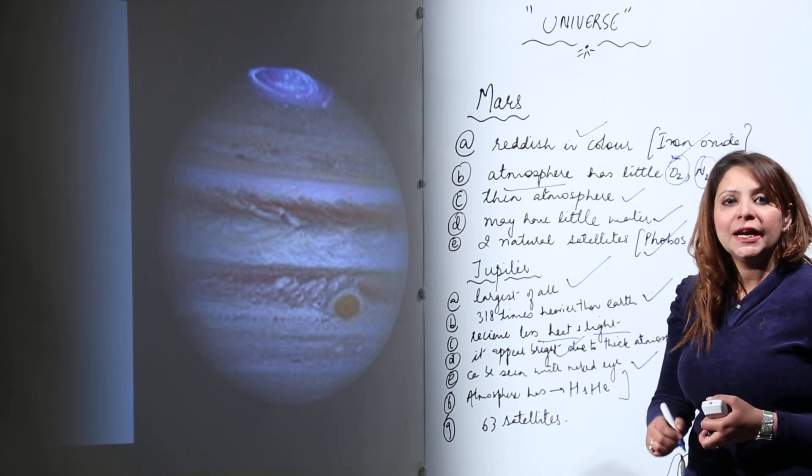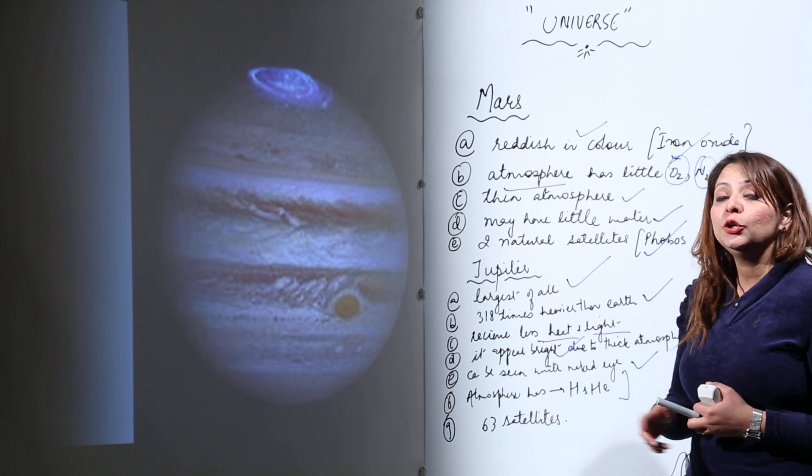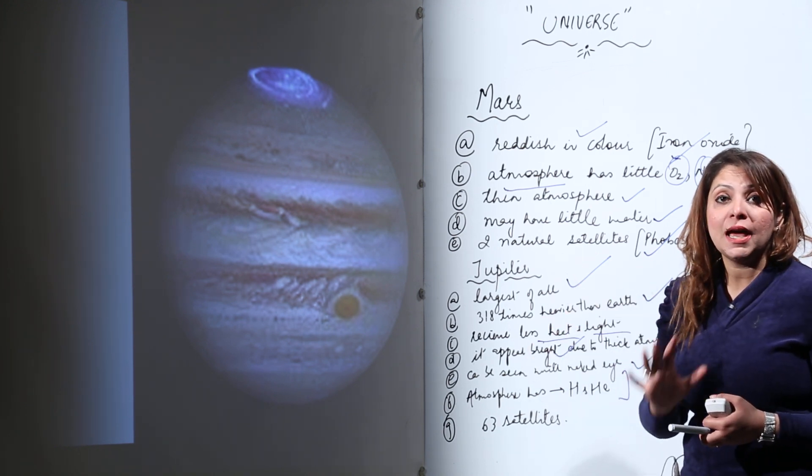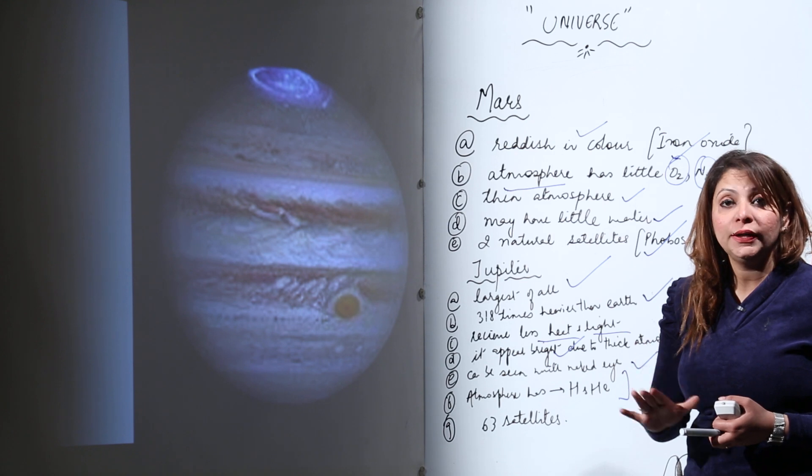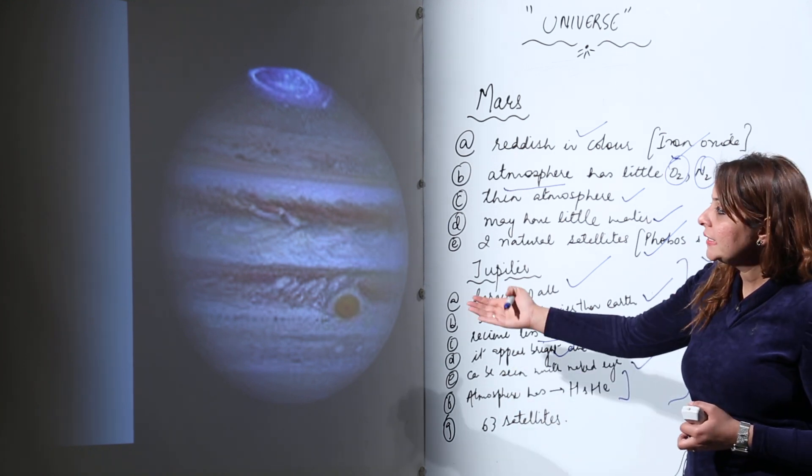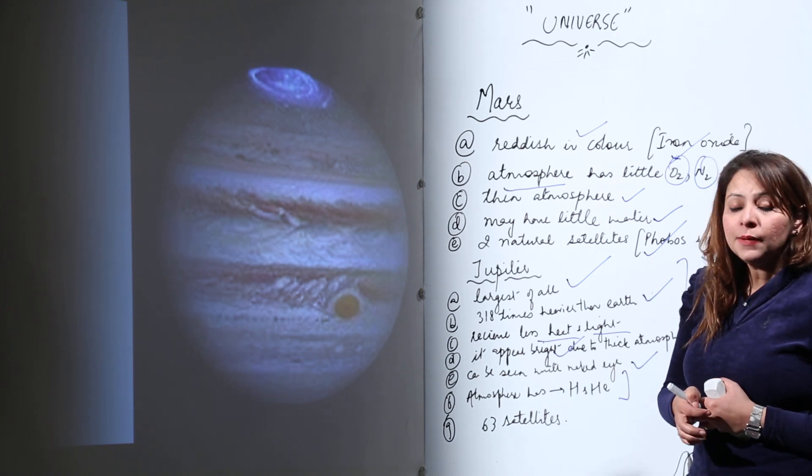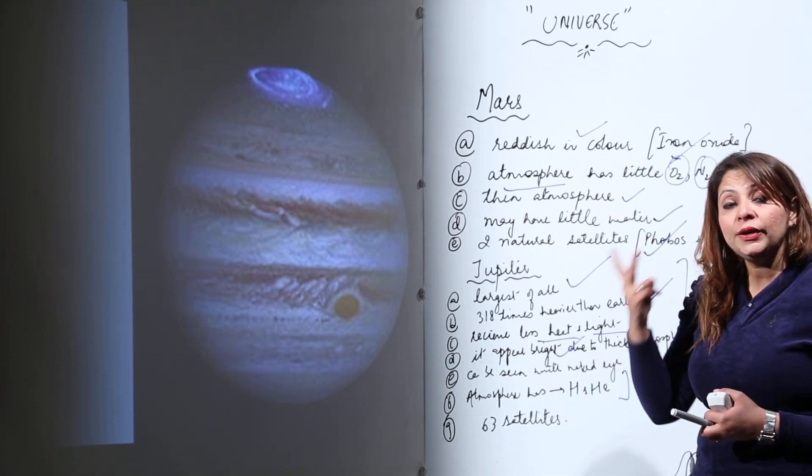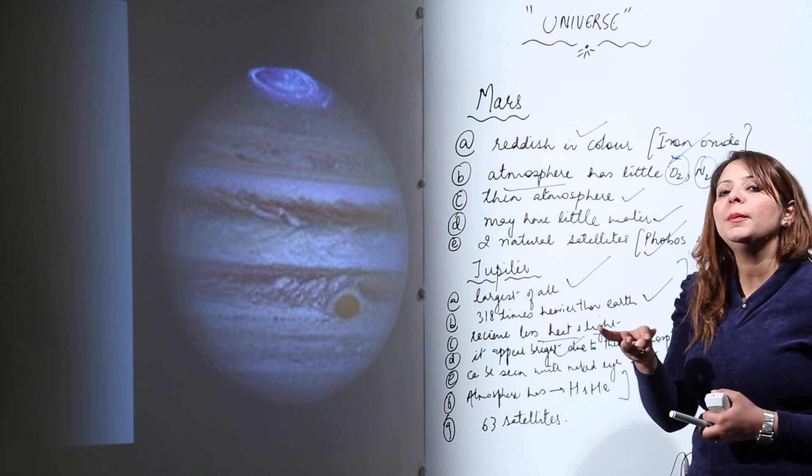This is a planet which has got 63 satellites. Can you imagine? It has 63 satellites. This is all about Jupiter. As you can see here, this is Jupiter. You should know that it is the largest planet with 63 moons.